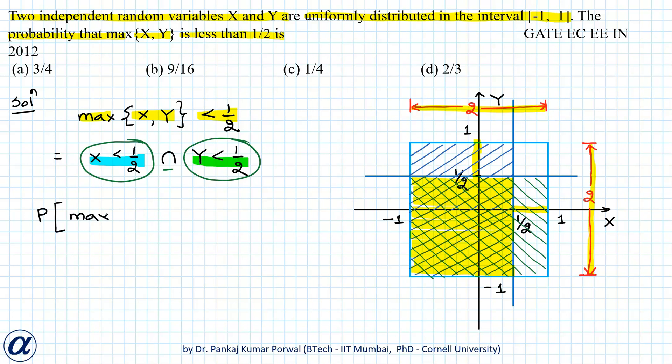So the probability that max(X, Y) will be less than 1/2 equals our favorable area, which I can easily find because X is -1 here and +1/2 here, and Y is -1 here and +1/2 here.